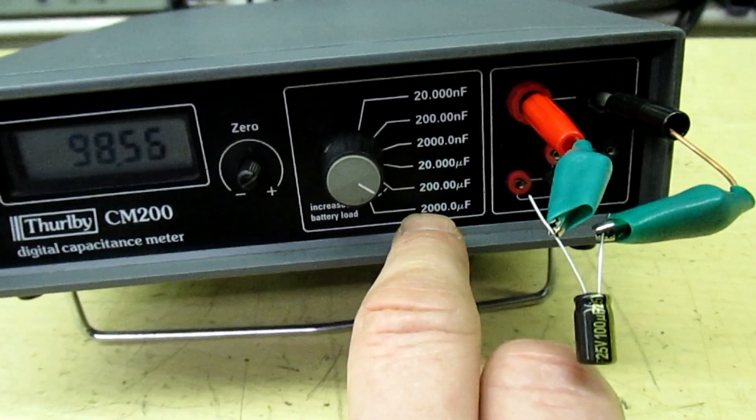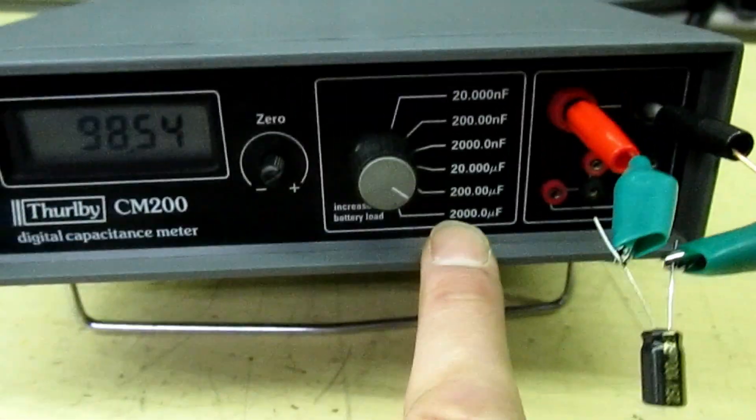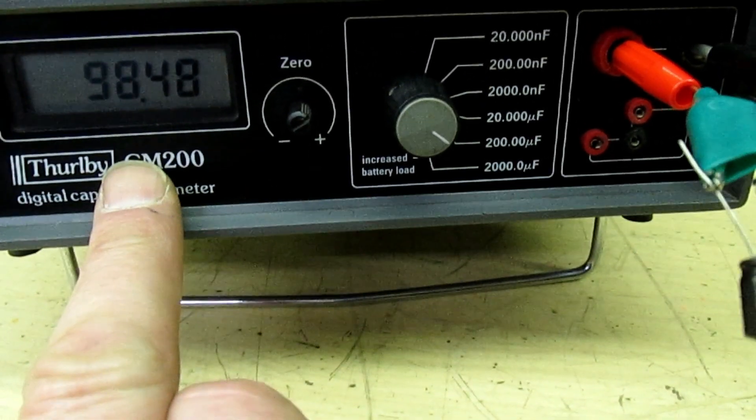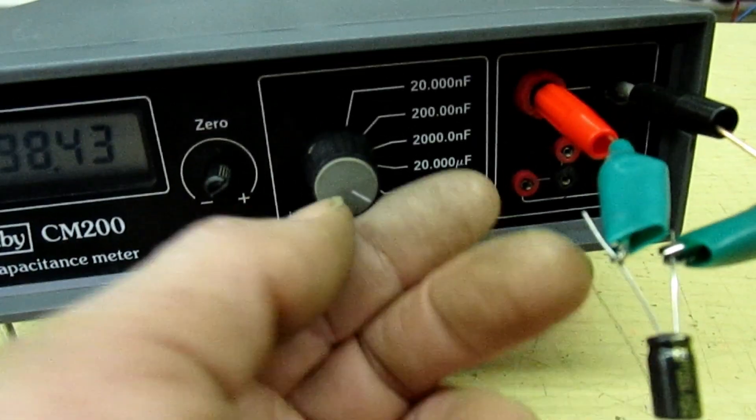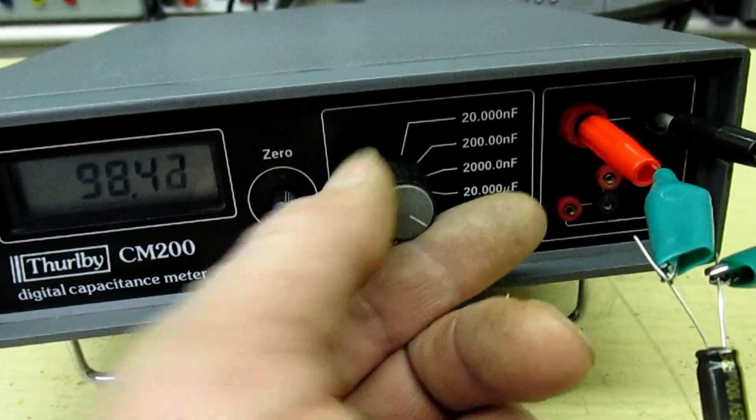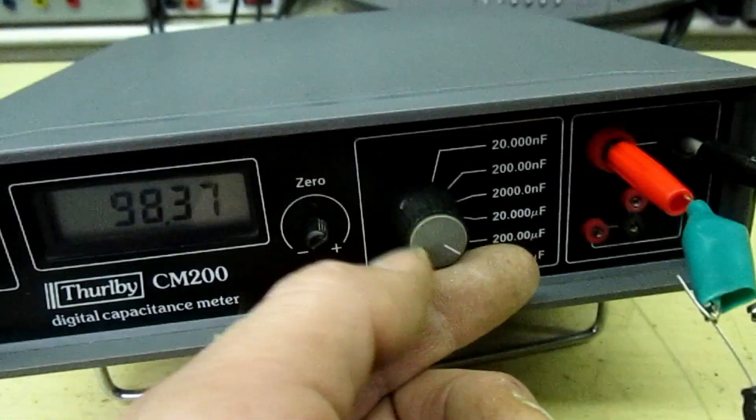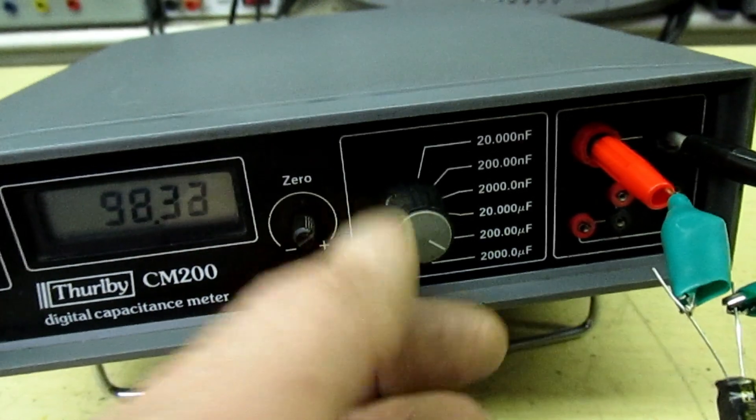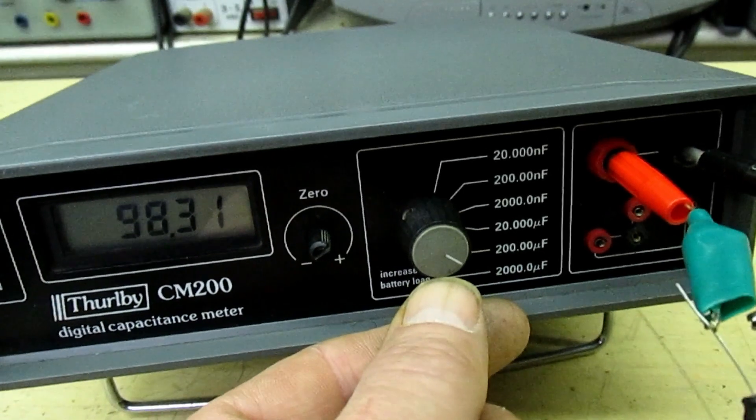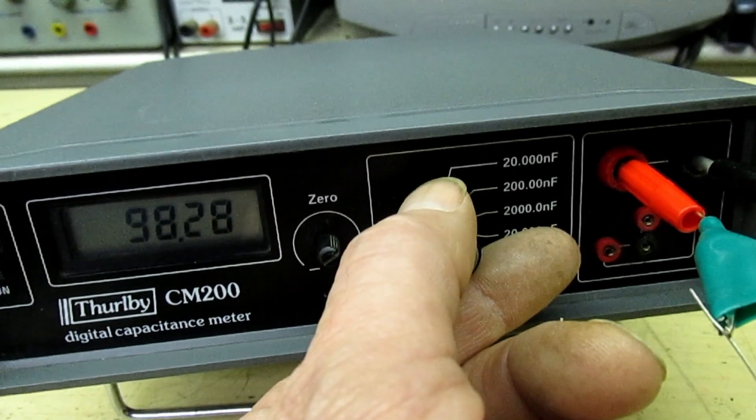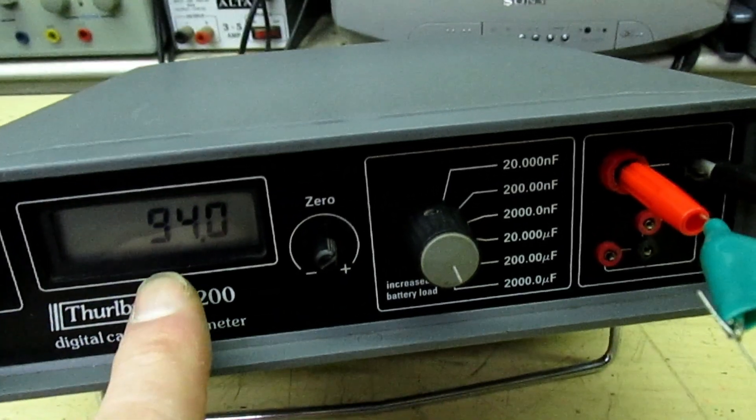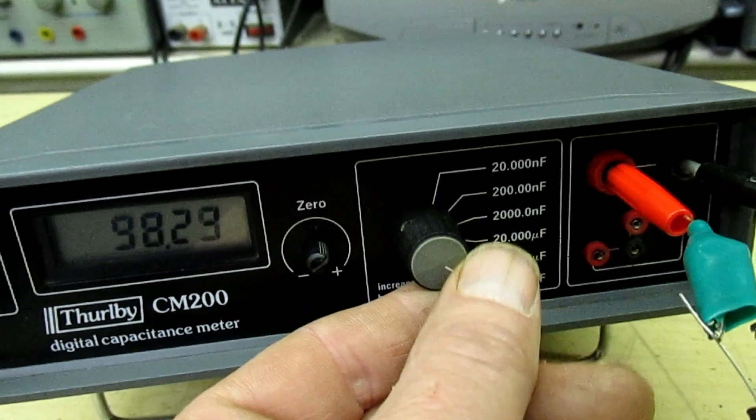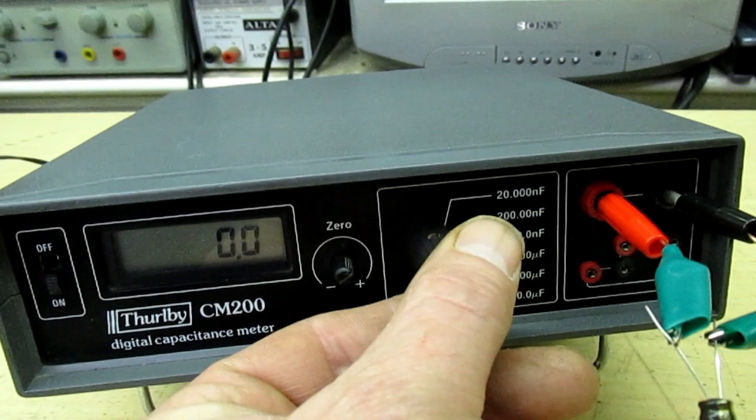The capacitor's in now on the 200 microfarad range, reading 98 microfarads. If I go up a range, that increases the operating frequency the capacitor's tested at. With a brand new capacitor, the capacitance will fall but only very slightly. We've got 98, go up a range, increase the frequency to about 100 kilohertz, and the capacitor has dropped to 94 microfarad. That's not a very big change. That's 93 at high frequency, 98 on the lower frequency.